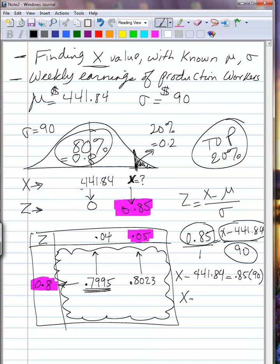To solve for x, we must keep x on one side and take all of our known quantities to the other side. But when I take this 441.84, which has a negative sign, to the other side, its sign will change, will become positive. So, we end up with 441.84 plus 0.85 times 90.